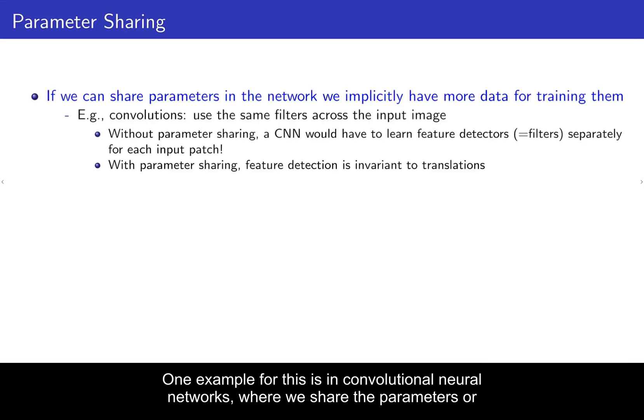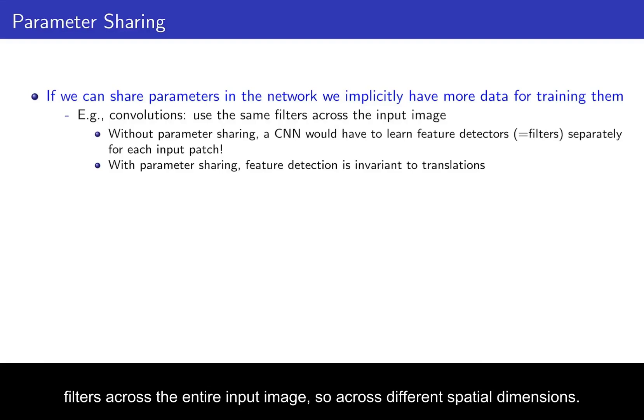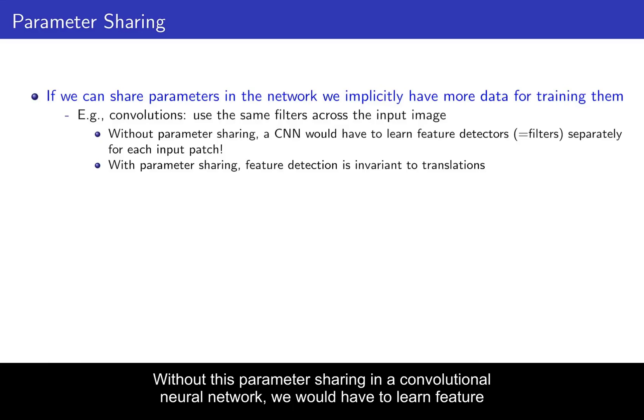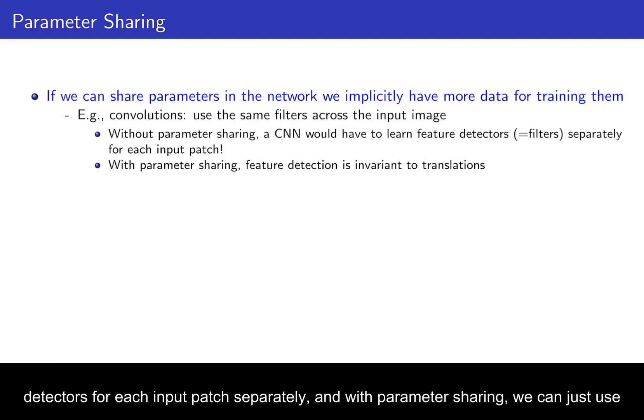One example for this is in convolutional neural networks, where we share the parameters of filters across the entire input image, so across different spatial dimensions. Without this parameter sharing in a convolutional neural network, we would have to learn feature detectors for each input patch separately.